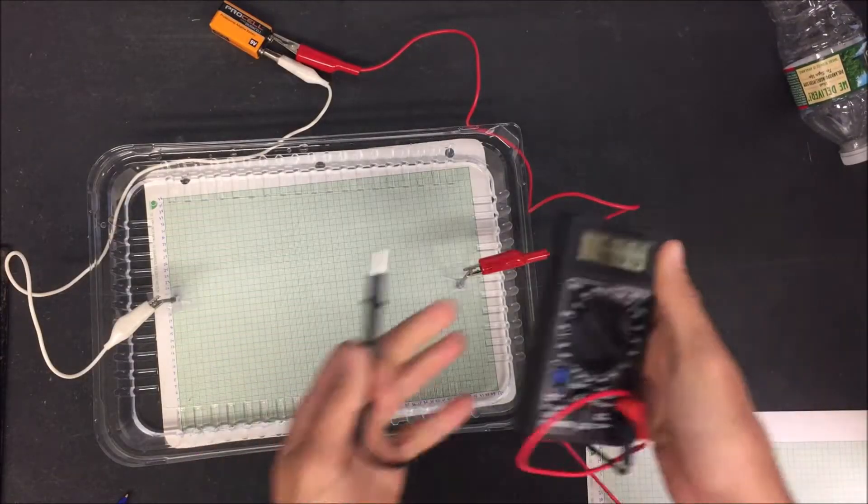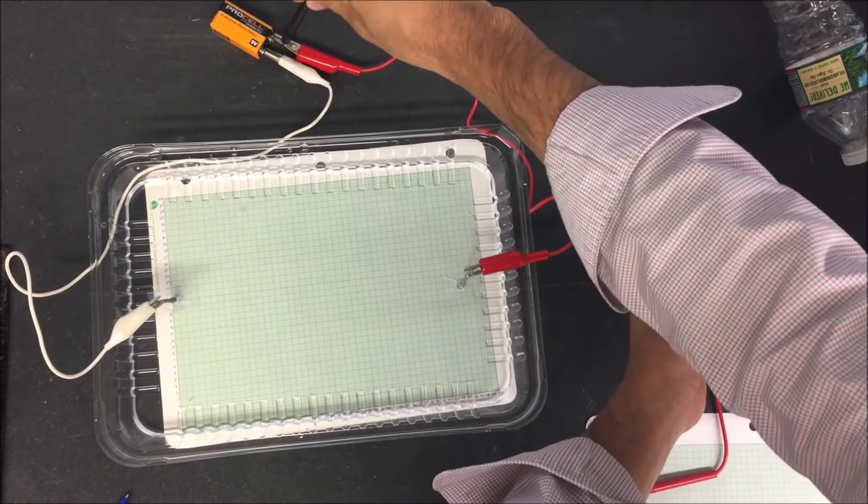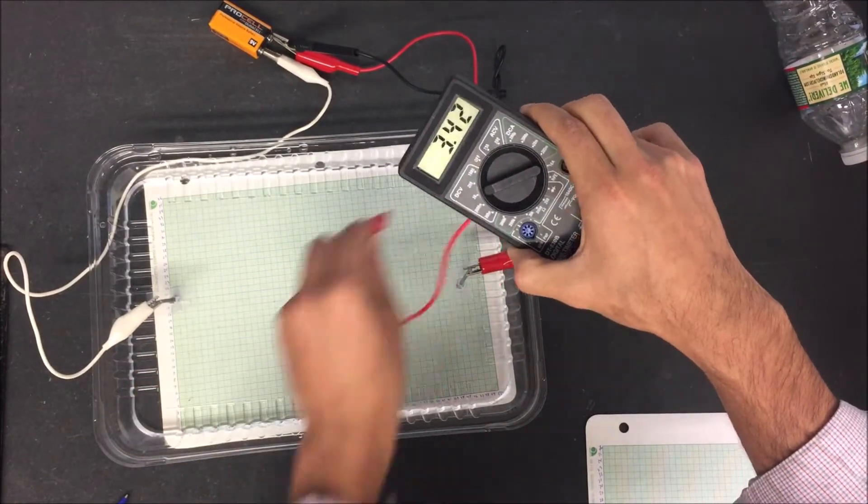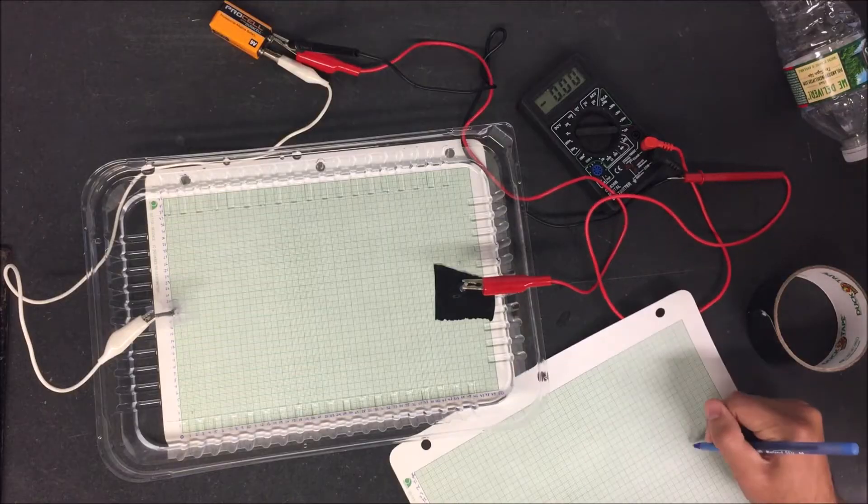And then you're going to get your volt meter and put the negative wire onto the negative part of the battery. And the positive, you should just play around with it and see that there's going to be different charges at different parts of the water.